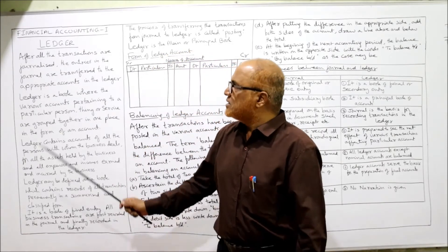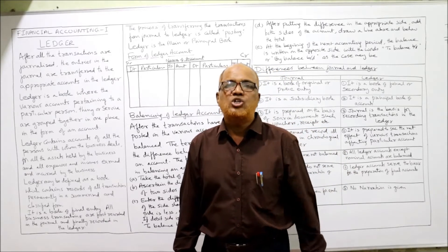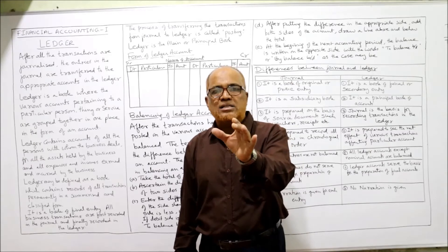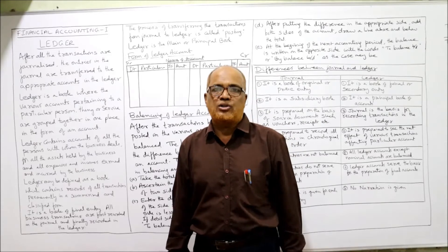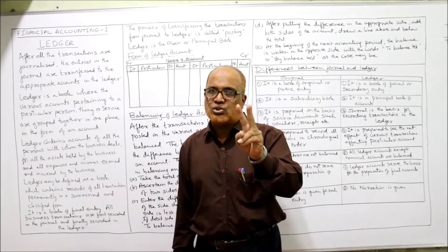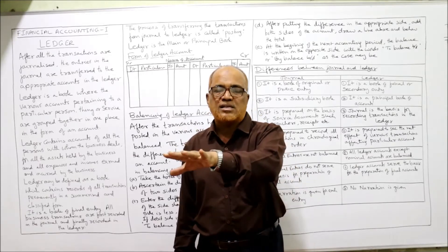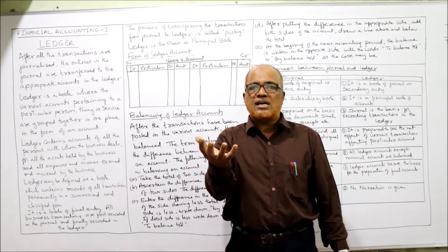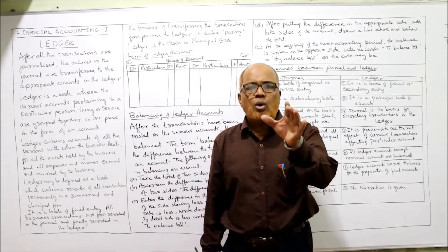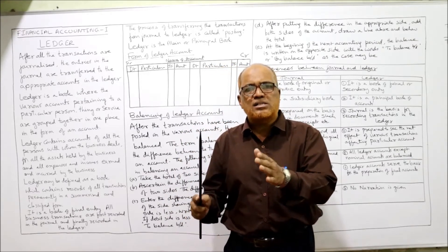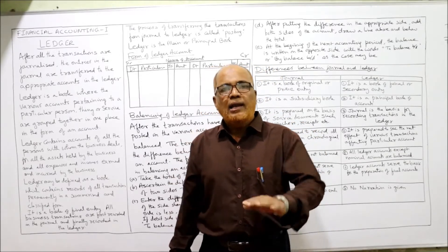After all transactions are recorded in the journal, periodically the transactions from the journal are transferred to another book called the ledger. There are principally two books of accounts: journal and ledger. The journal is the first book where transactions are recorded as soon as they take place. It is also called the subsidiary book.